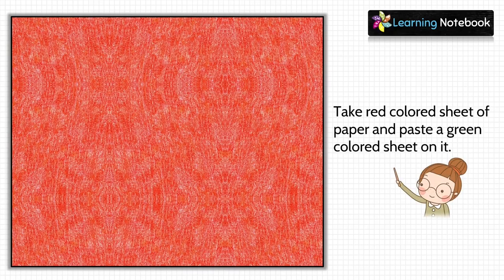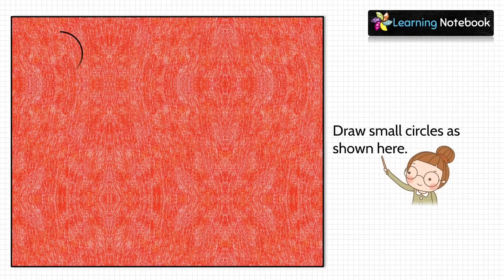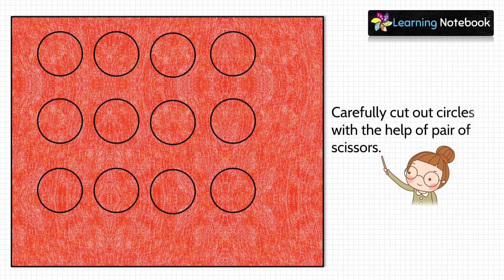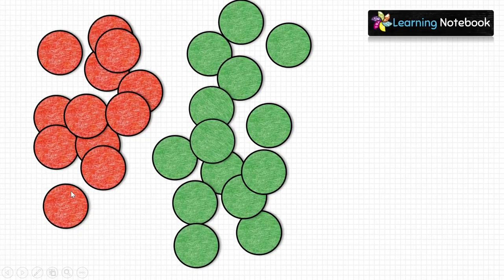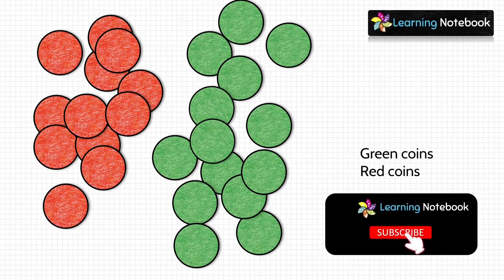In the first step, take a red colored sheet and paste a green colored sheet on it as shown. Now draw small circles on the sheet using coins as a guide, then carefully cut out these circles with a pair of scissors. Here I have made some coins which are green on one side and red on the other side.